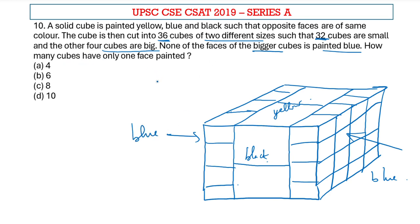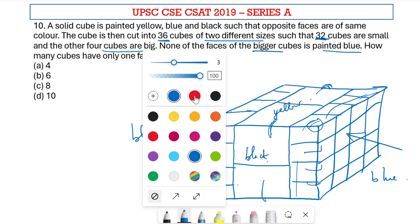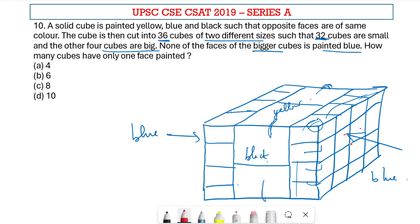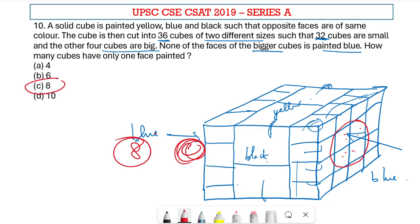How many cubes have only one face painted? We cannot take any of the big cubes because two faces are painted, and we cannot take any corner portions because three faces are painted. The only possible cubes with only one face painted are the ones in the center — these four on this face and four on the other side — giving us 4 plus 4 equals 8. Therefore, option C is the right answer.